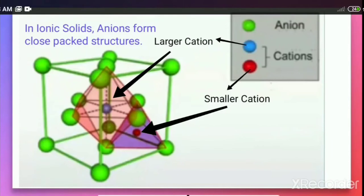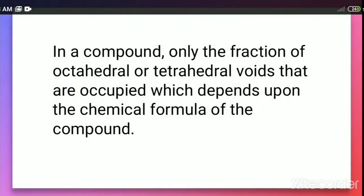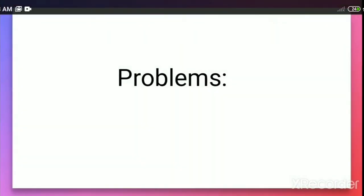However, not all the octahedral or tetrahedral voids are occupied. In a given compound, only a fraction of octahedral or tetrahedral voids are occupied, which depends upon the chemical formula of the compound. Let us discuss some problems in which, with the help of tetrahedral and octahedral voids, we find out the formula of the compound.